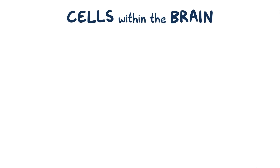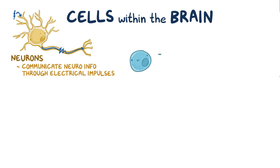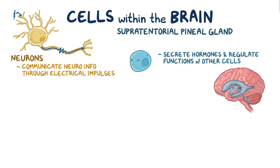Focusing in on cells within the brain, there are many different types with specialized functions. For example, neurons communicate neurologic information through neurotransmitter-regulated electrical impulses. There are also cells that secrete hormones into circulation and regulate the functions of other cells throughout the body. These cells are found in glands like the supratentorial pineal gland, located just behind the third ventricle, or the infratentorial pituitary gland located near the front of the third ventricle.